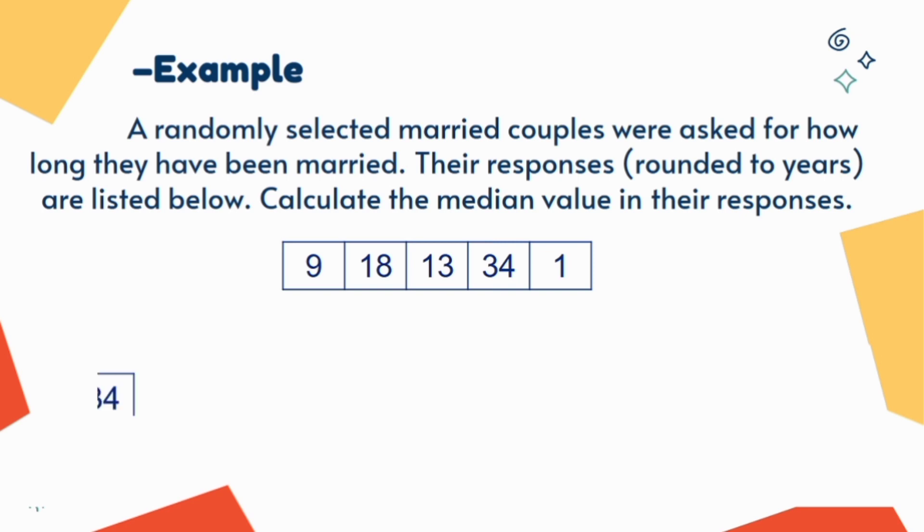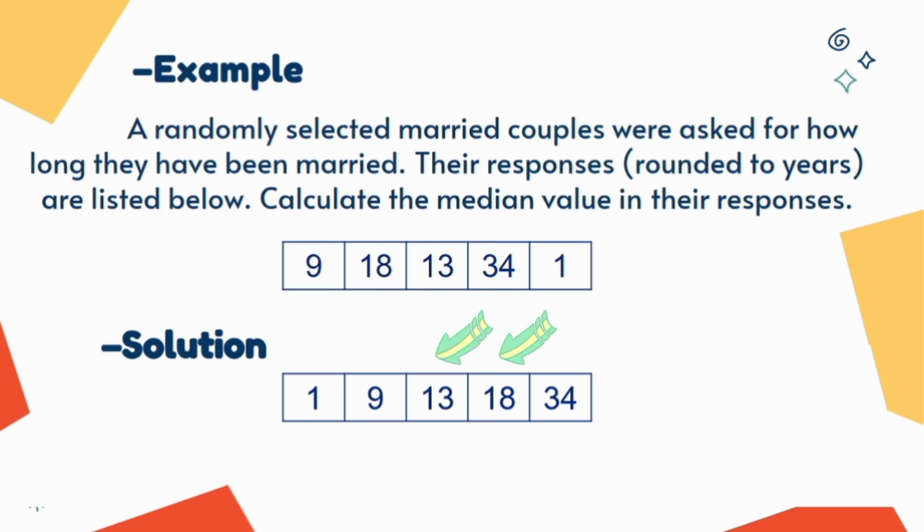For example, to calculate median in married couples example we first need to arrange data set. As the data set contains the odd number of observations, the median is middle value that is 13. And if there are even number of observations, again arrange the data set and now the median is the mean of two middle values. The result is 15 and a half years.